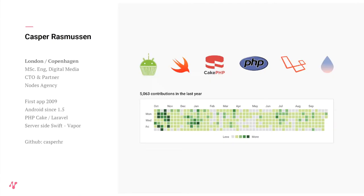I've done mobile applications since 2009, started with Symbian apps and moved into Android. In the last five years, I've spent a lot of time in backend development as well. The language frameworks I work with include PHP, Swift, Java, and Android development. When I'm not doing client projects, I'm fairly active in open source projects. This is my GitHub stats — you all know GitHub, the social development platform for contributions to open source projects.